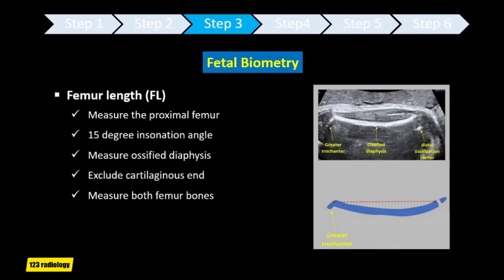The femur length can be reliably used after 14 weeks of gestation. Usually we measure the proximal femur to the probe. You have to see both cartilaginous ends and measure the longest axis of the diaphysis, without including the distal femoral epiphysis. Ideally, measure both femurs.